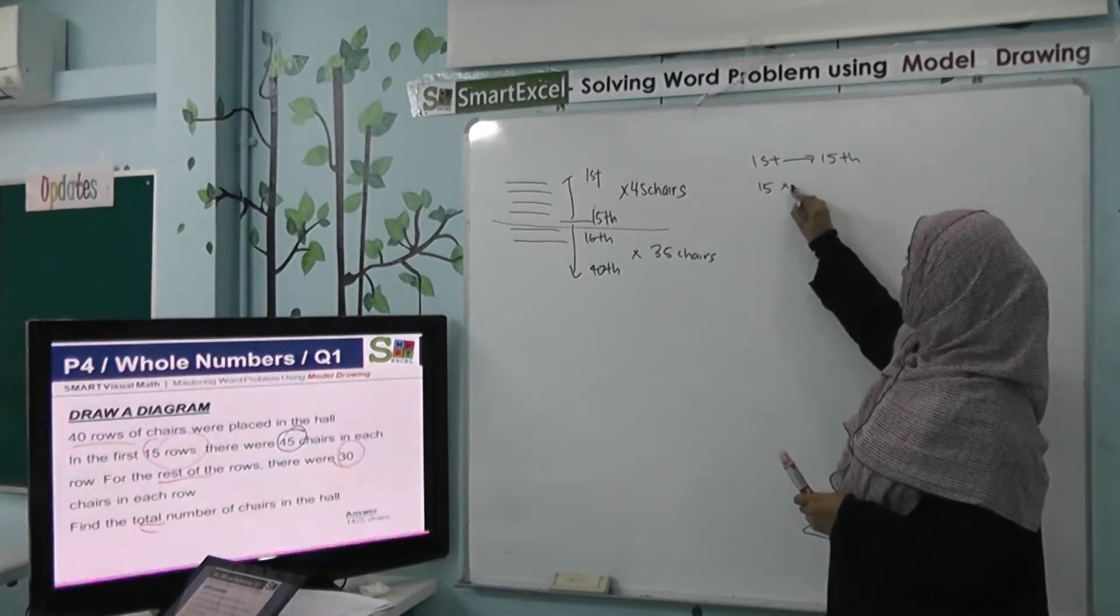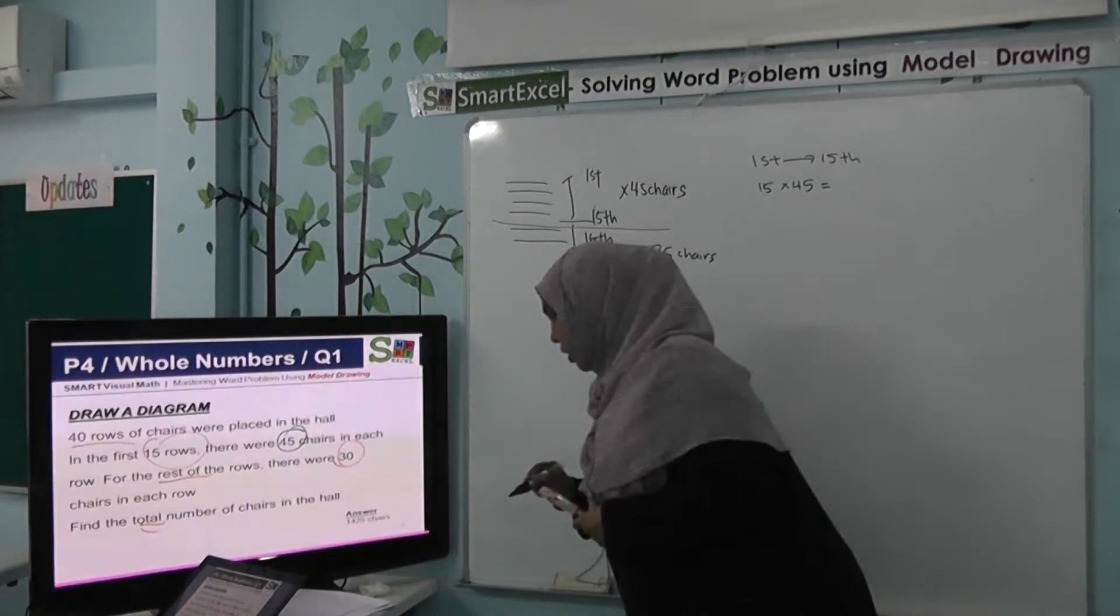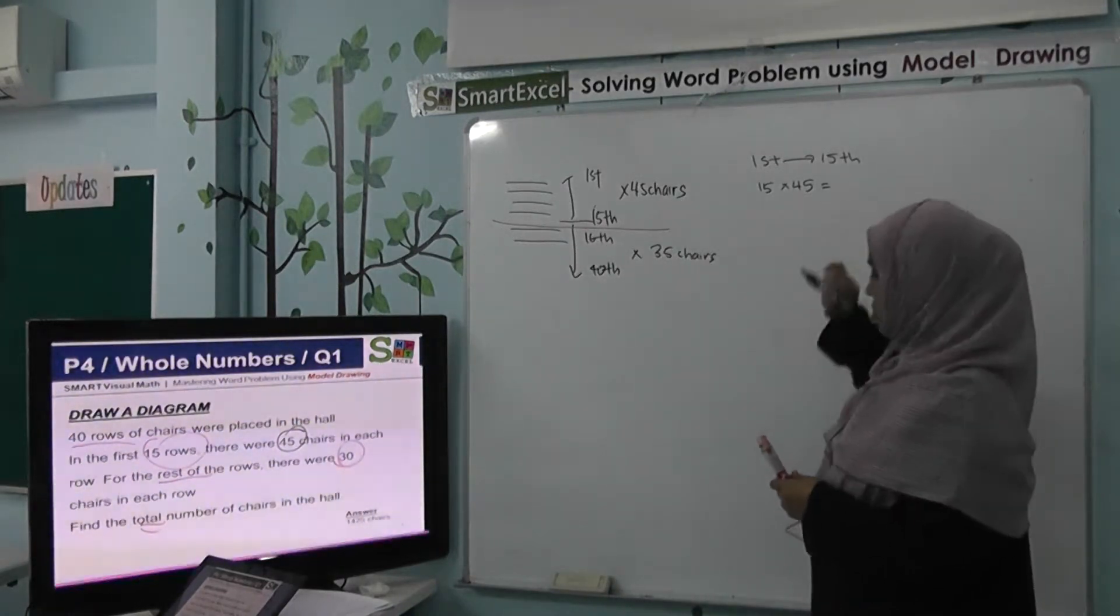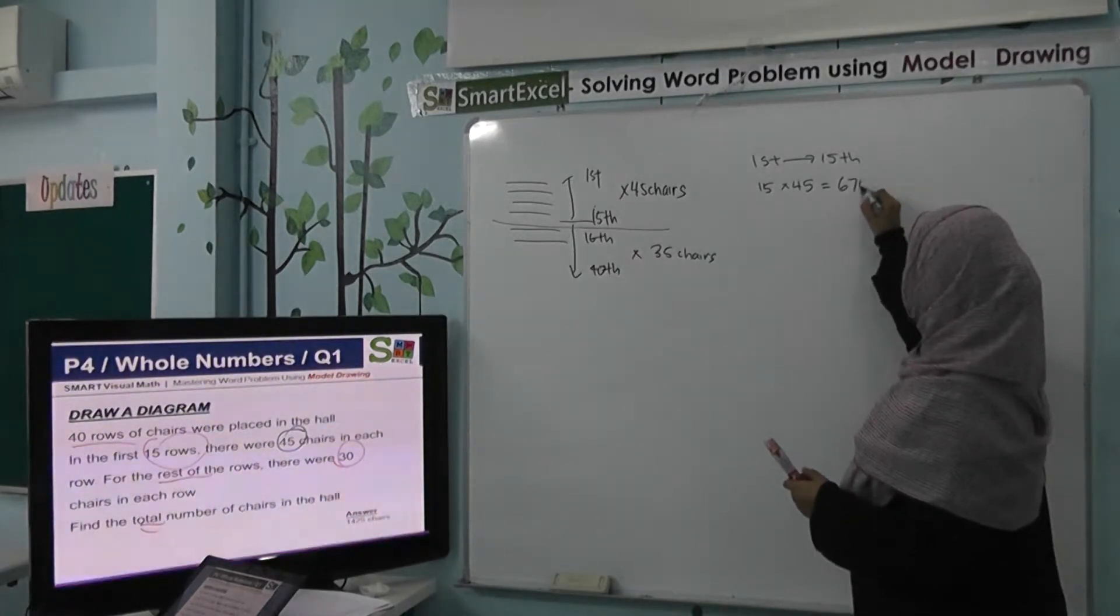So 15 we multiply by 45 chairs, we will get 675 chairs.